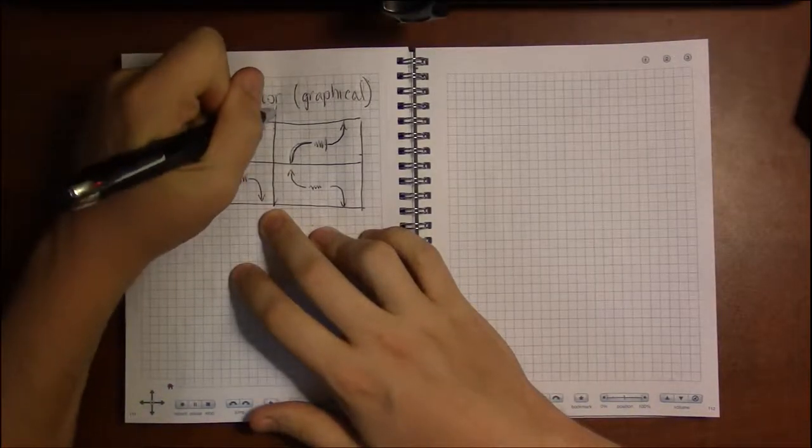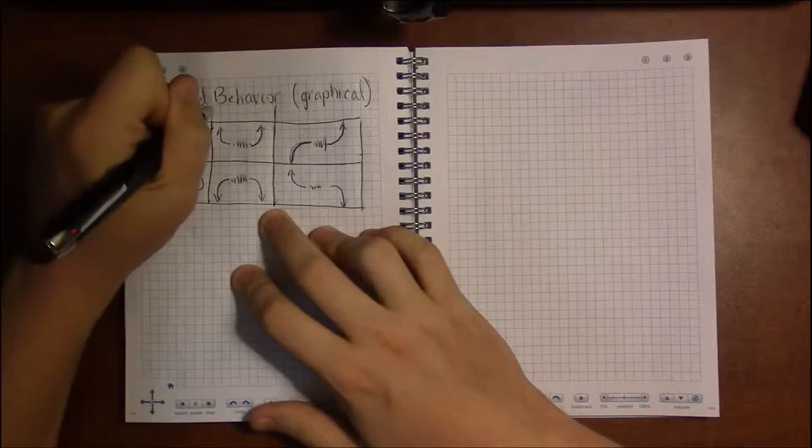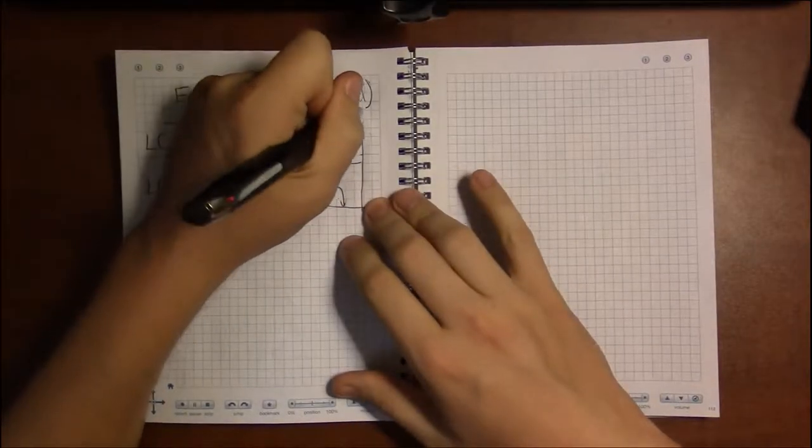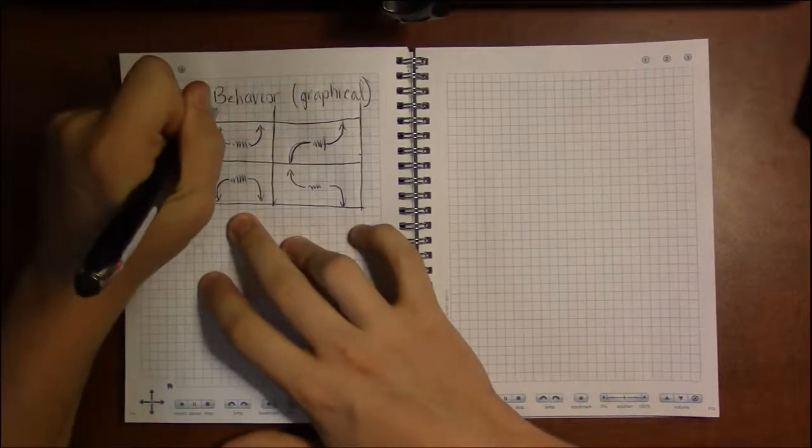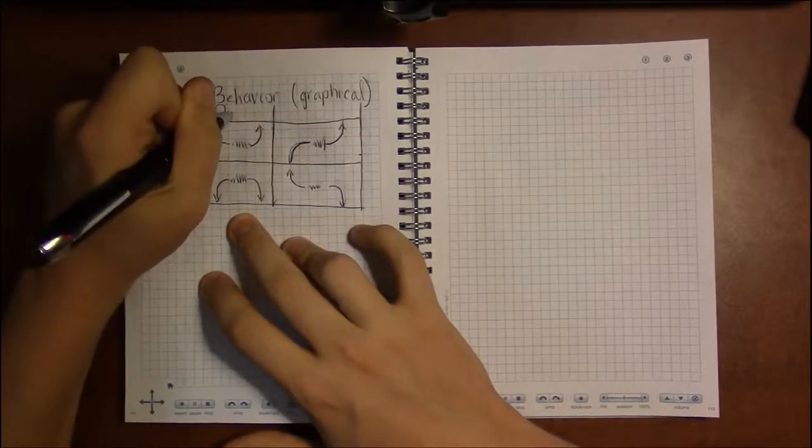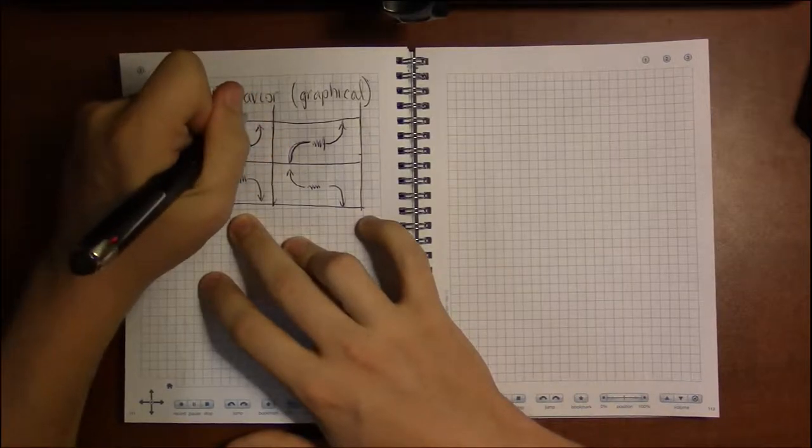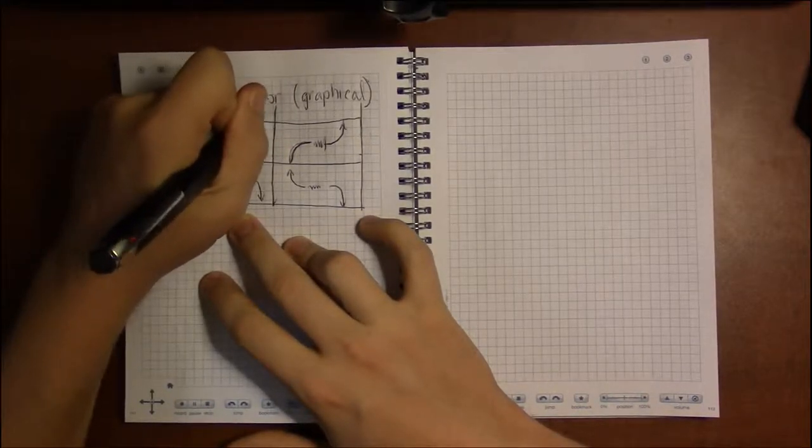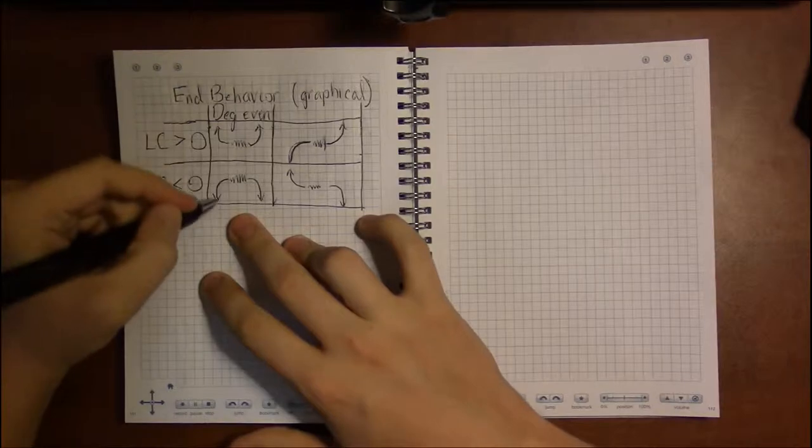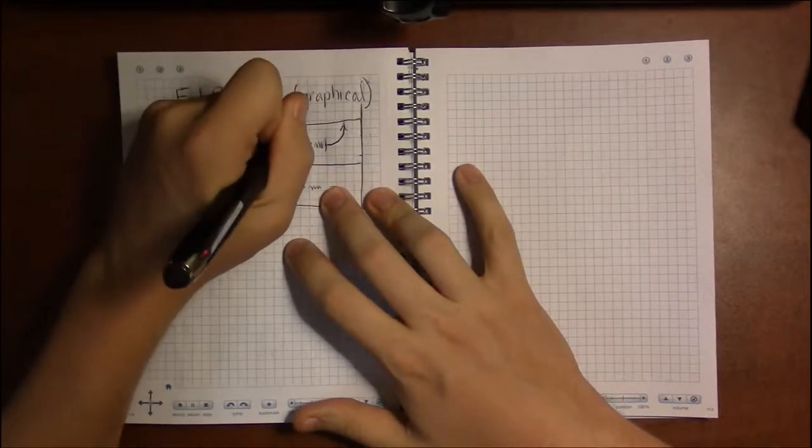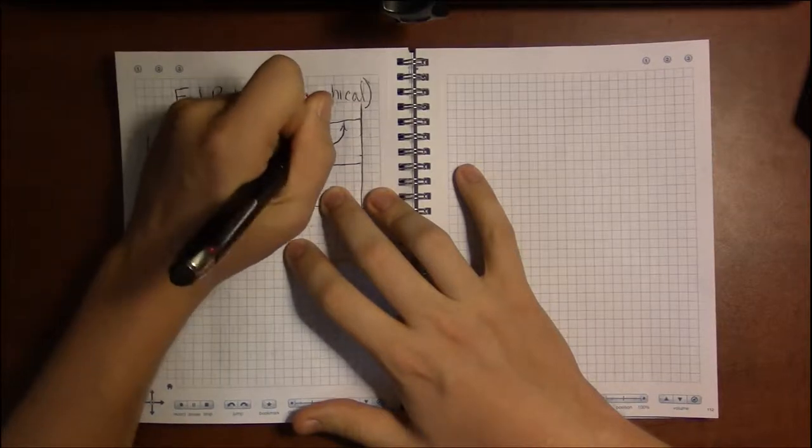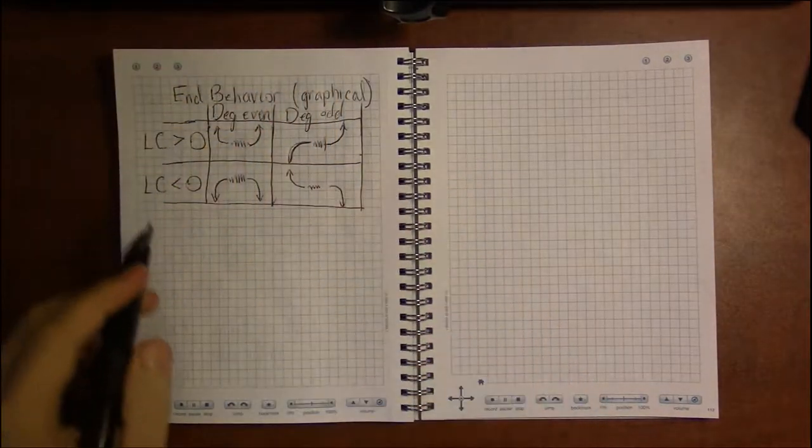What determines which column you're in is the degree, and it all has to do with whether the degree is even or odd. So I'm just going to say DEG for degree. If the degree is even, you're in this first column. If the degree is odd, you're in the second column.